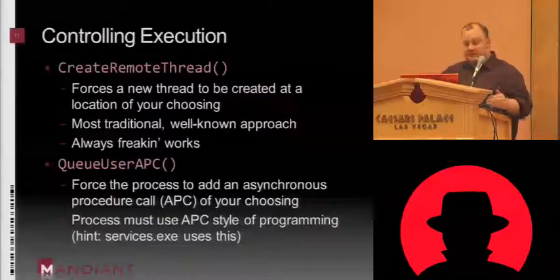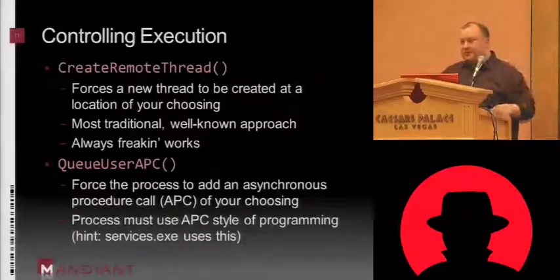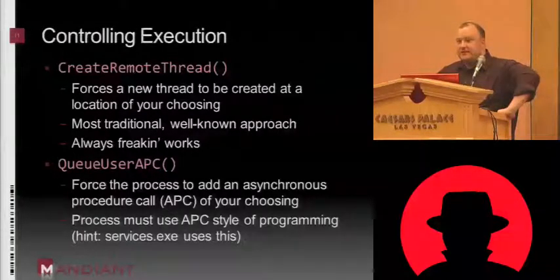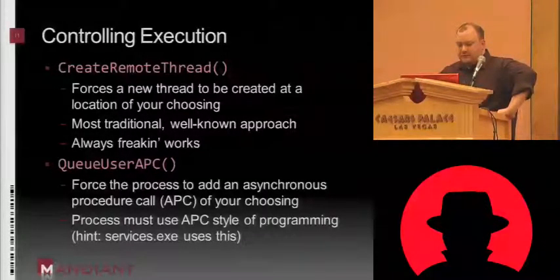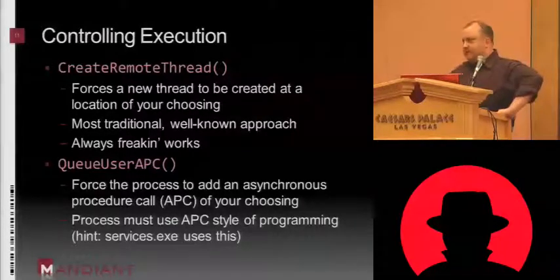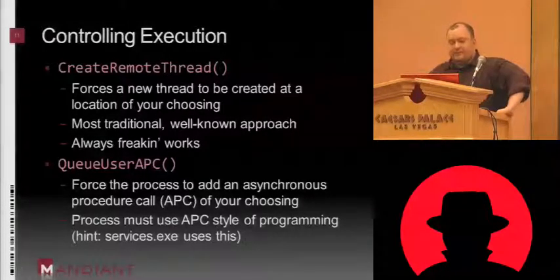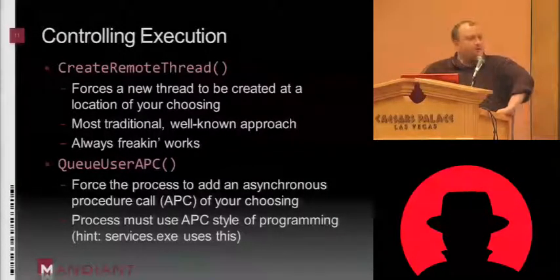The first, most common method is CreateRemoteThread. This will basically force another process to start executing at a location of your choosing. Once you've allocated memory and written your code there, it doesn't take a rocket scientist to figure out that this could be potentially malicious. This pretty much always works — CreateRemoteThread. There are some cases with Windows 7 and above where they're starting to restrict its usefulness, but for the most part it always works.